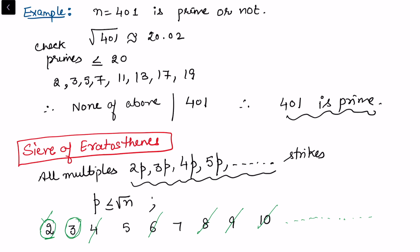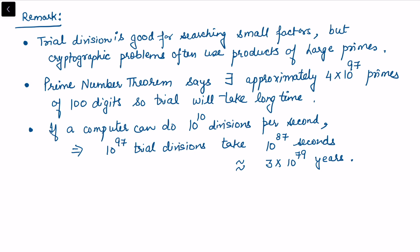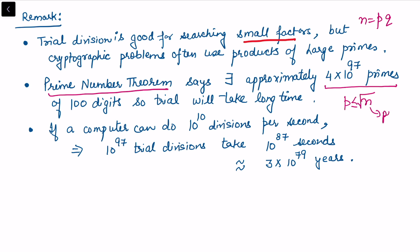A few remarks: trial division is good for searching small factors, but in cryptographic problems we use the product of large primes. We require n = p × q where p and q are typically 100-digit primes. The prime number theorem says there are approximately 4 × 10^97 primes of 100 digits. If a computer performs 10^10 divisions per second, 10^97 trial divisions would take 10^87 seconds, which is approximately 3 × 10^79 years.